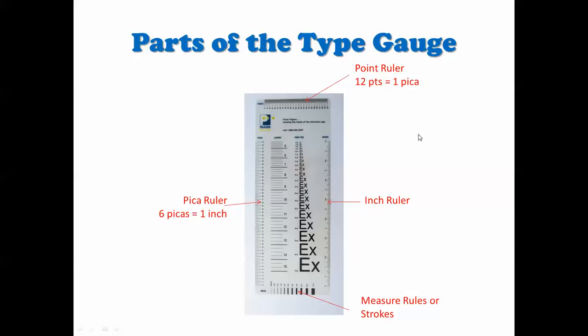So to begin with, let's look at the parts of a type gauge. On the left here you will see a pica ruler. Remember, six picas equals one inch, and your type gauge may have the picas in a slightly different place, but here it is on this one.